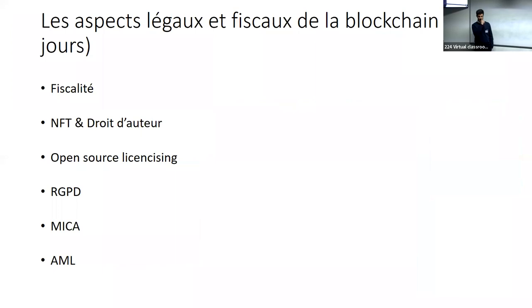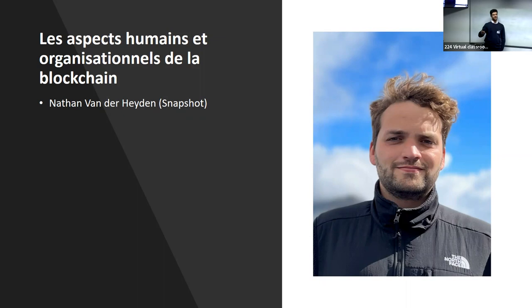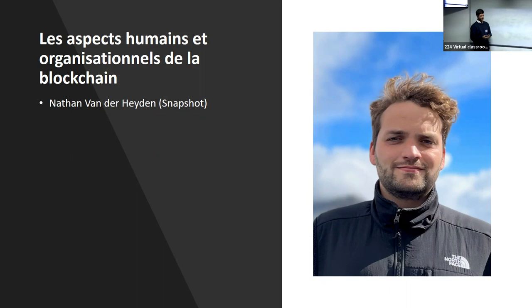Pour résumer : les aspects humains et organisationnels de la blockchain sont aussi importants. On pense souvent à des ordinateurs et des nœuds décentralisés, mais c'est une technologie qui permet des choses incroyables au niveau des relations humaines. Il y a le concept de DAO — Decentralized Autonomous Organization — des organisations autonomes décentralisées qui permettent à une série de personnes de se mettre ensemble sur un projet et d'y participer chacun à son échelle. Par exemple, des DAO d'investissement où des gens mettent des fonds dans un smart contract et votent pour décider quoi en faire. C'est l'exemple le plus connu qui est sorti dans les gros titres.